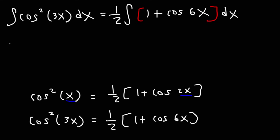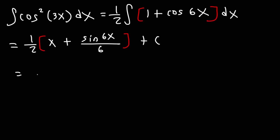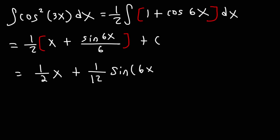Now we find the antiderivative. The antiderivative of 1 is x. The antiderivative of cosine 6x is sine 6x divided by 6. Plus c. Distributing the 1/2, we get the final answer: 1/2 x plus 1/12 sine 6x plus c.